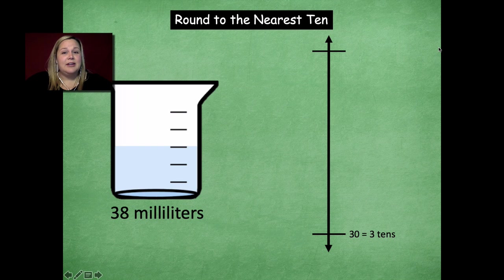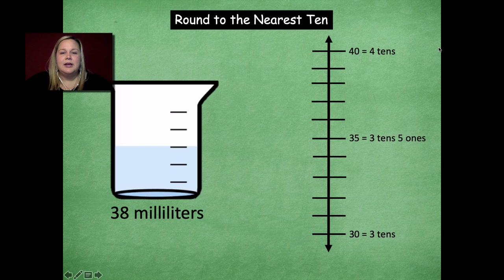Then one more 10 would be my top of my vertical number line, which is four tens, which equals 40. So then you're going to label your, place your points in between. So we're going all the way up until we get there. And there is our midpoint on our number line, which is 35, three tens, five ones. Okay, so remember, you're just looking for that middle point.